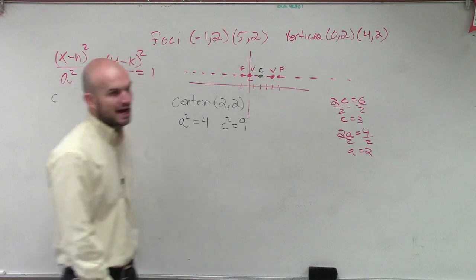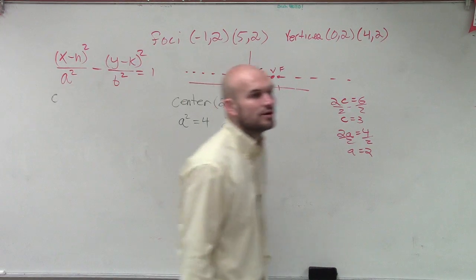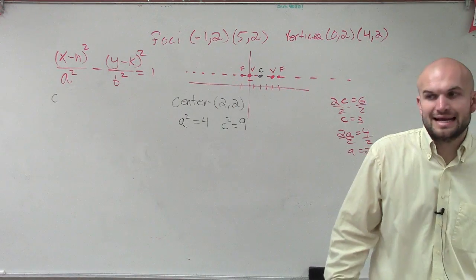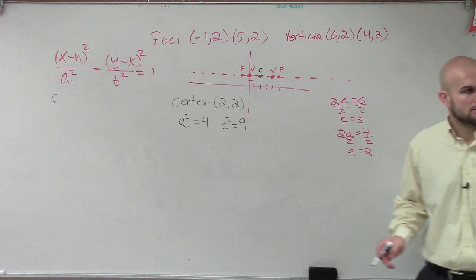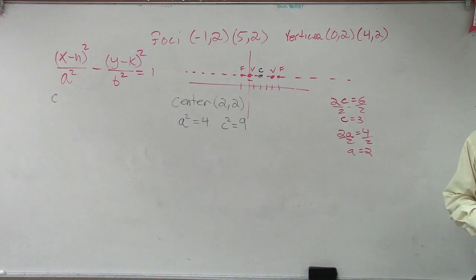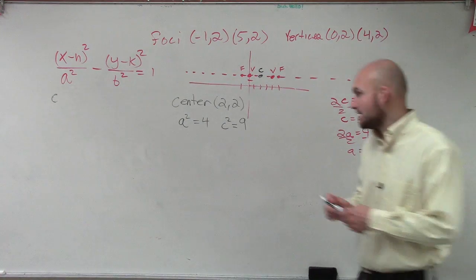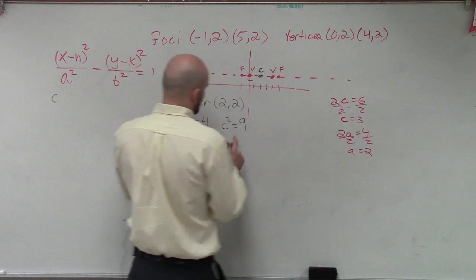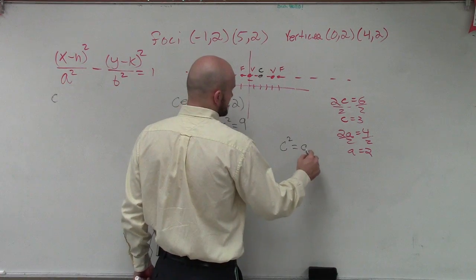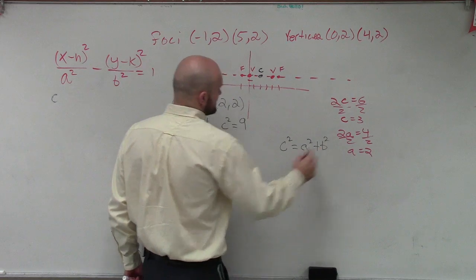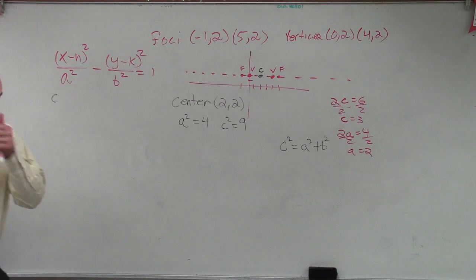Now, why is it so important for us to be able to figure out what c and a are? Because now we can figure out what b is, right? C is bigger than a, though. When you figure it out. Okay. So, let's go and take a look at it. So, remember, in this one we're going to have c² equals a² plus b². Right?